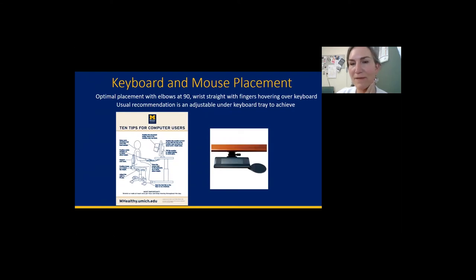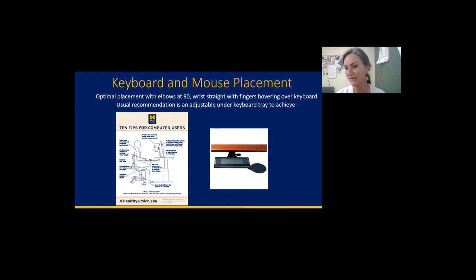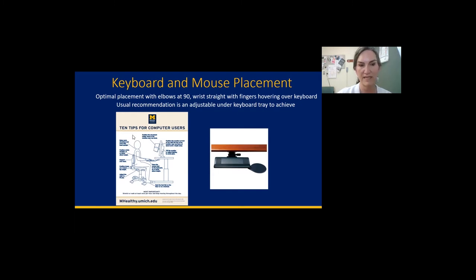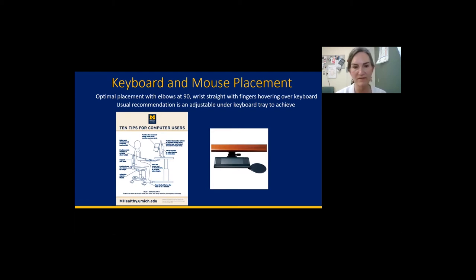For keyboard and mouse placement, we recommend optimal placement with your elbows at 90 degrees. Your wrists should be straight with your fingers hovering over the keyboard in a slight cupped position. The best setup is to have an under-desk keyboard tray with the mouse. There's also a University of Michigan ergonomics website with 10 tips for computer users showing all the recommended positioning.